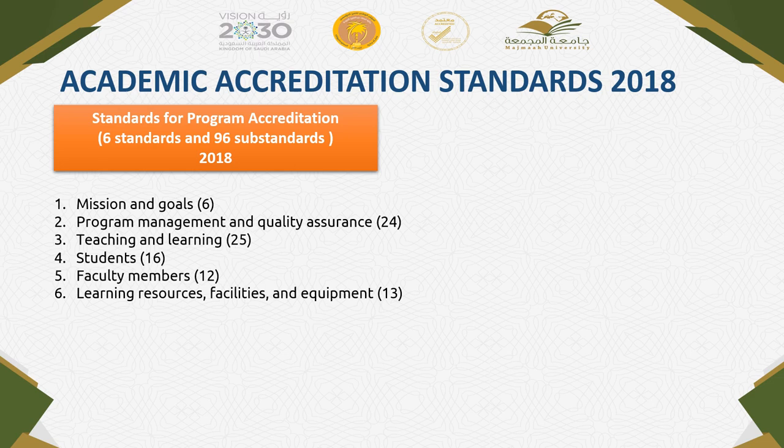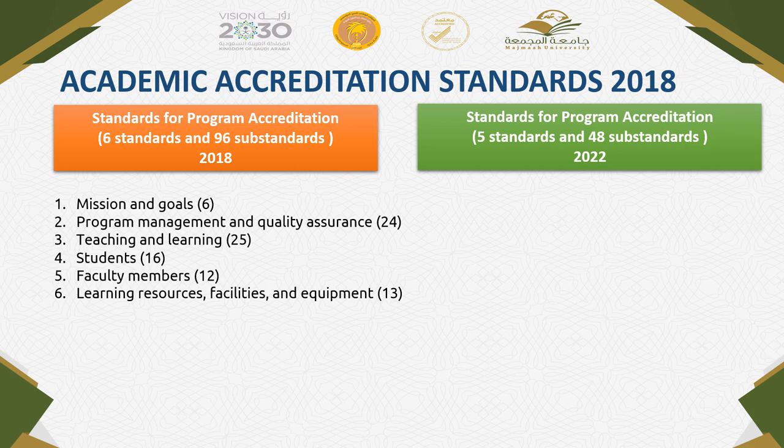Of course, as you know, some of these criteria are essential criteria. For the standards of academic accreditation for programs in 2022, there are five standards and 48 substandards or criteria, which means the number of standards decreased by one and the number of criteria decreased by half.